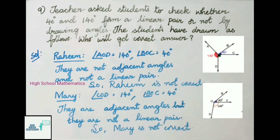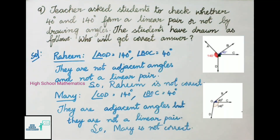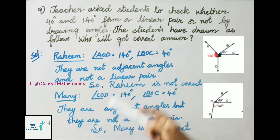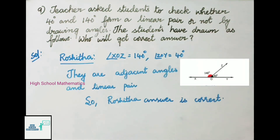Question number nine: teacher asked students to check whether 40 degrees and 140 degrees form a linear pair by drawing angles. Rahim drew angle AOD equals 140 degrees and angle POC equals 40 degrees — Rahim is not correct. Mary drew angle COD as 140 degrees and angle POC as 40 degrees — they are adjacent but not a linear pair, so Mary is also not correct. Roshita drew angle XOZ equals 140 degrees and angle ZOY equals 40 degrees — they are adjacent angles and a linear pair, so Roshita's answer is correct.